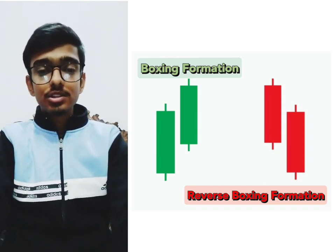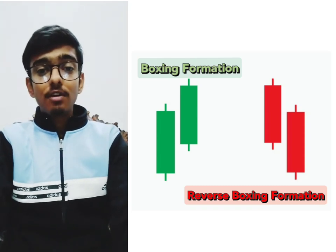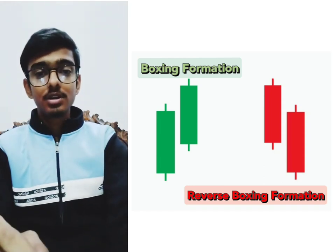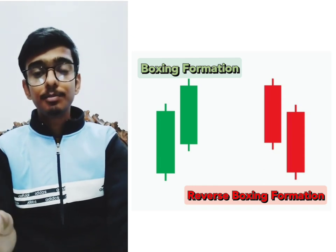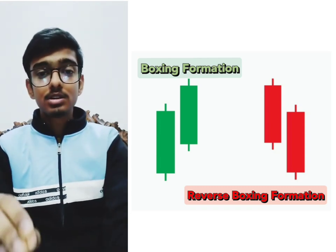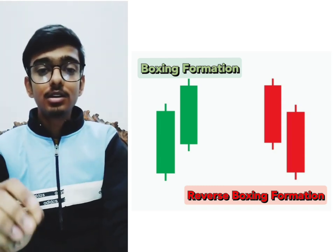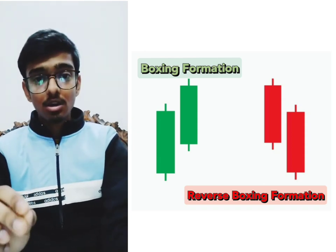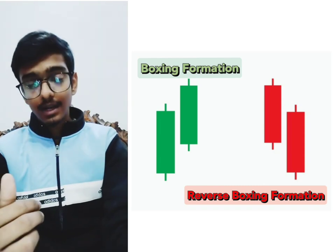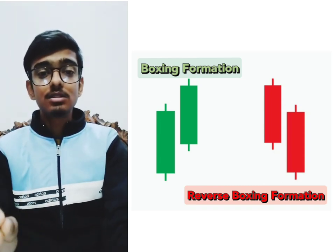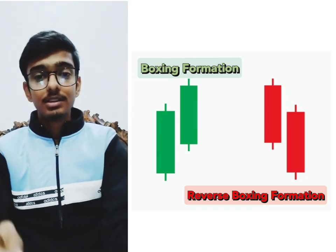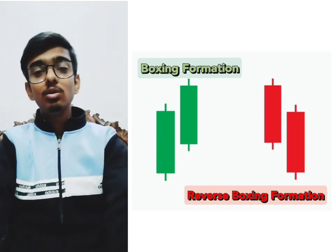We also studied what the combination of two candles represents. If all four points — opening, closing, highest, and lowest — of a green candle are higher than the previous green candle, then it is called boxing formation. Repeated boxing formation represents that the stock price is expected to rise in the future. If all four points of a red candle are lower than the previous red candle, then it is known as reverse boxing formation. If reverse boxing formation is forming repeatedly, it shows that the stock price is expected to decrease in the near future.